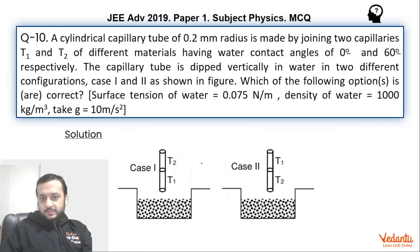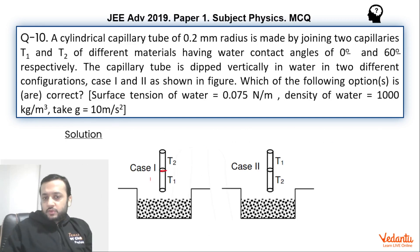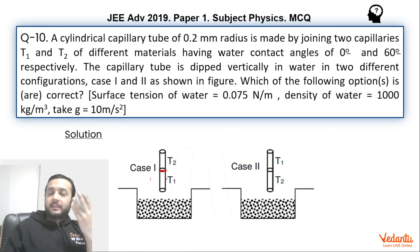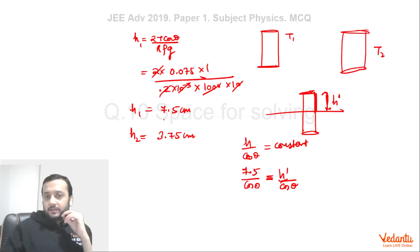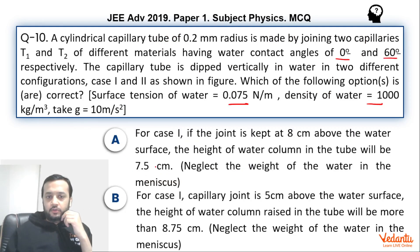For case 1 — T1 below, T2 above — if the joint is kept 8 cm above the water surface, the height of the water column in the tube will be 7.5 cm. This is pretty obvious: if T1 extends 8 cm but water only wants to rise 7.5 cm in T1 material, then the presence of T2 is irrelevant. Water rises as if only T1 exists, reaching 7.5 cm. So option A is correct.